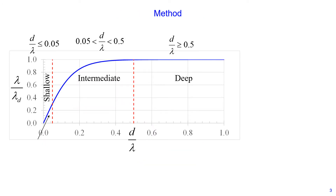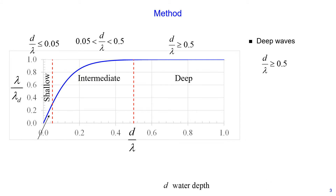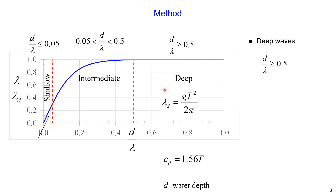We first start with method. Depending on the wave type, we use different equations to calculate wavelength and wave speed. There are three types of waves. Deep waves are defined when the ratio of water depth divided by wavelength is greater or equal than 0.5. For these conditions, we have equations where both wavelength and wave speed only depend on the wave period T.